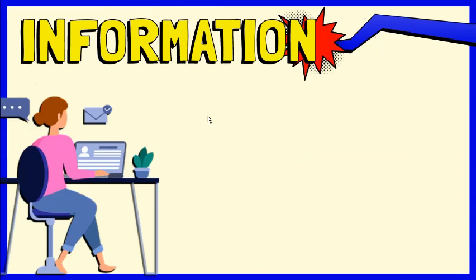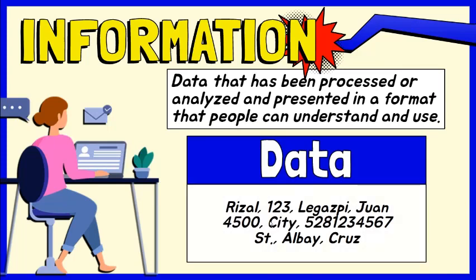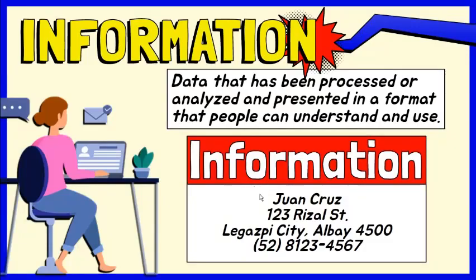Data becomes information when it is processed or analyzed and presented in a format that people can understand and use. To illustrate data, consider it as the set of random words and numbers separated by commas. To turn this into information, the words and numbers were interpreted, organized, and formatted according to predefined parameters. Now the meaning of the data is clear. It is the contact information for the person named Juan Cruz.